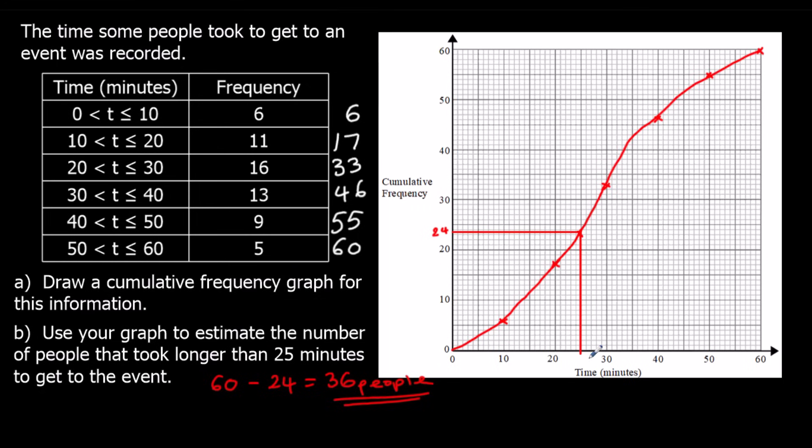24 people took less than 25 minutes, which means the rest of them — 36 people — must have taken longer than 25 minutes.